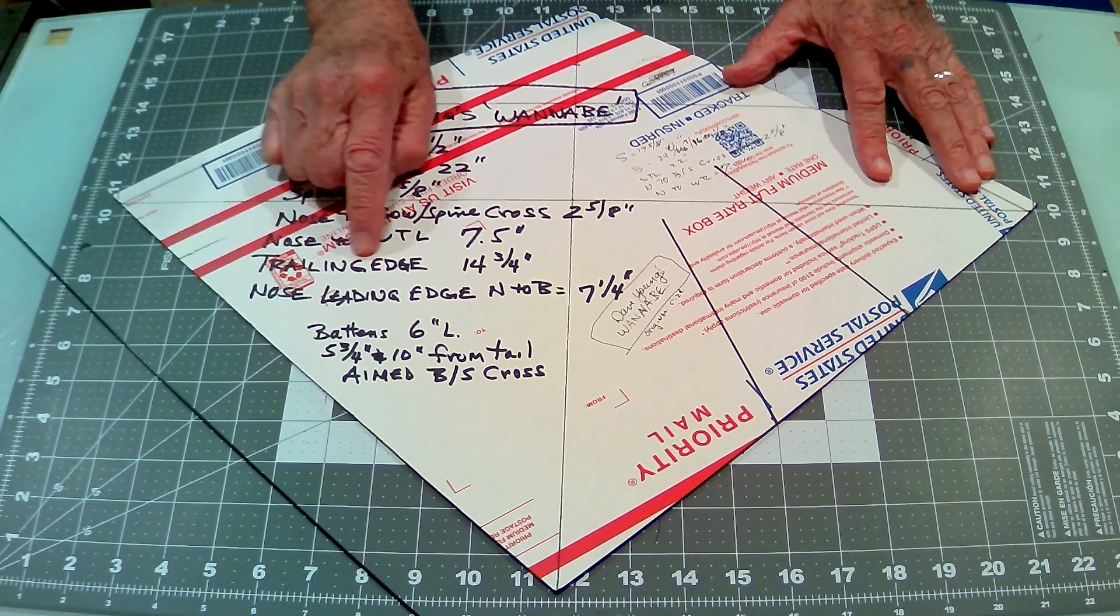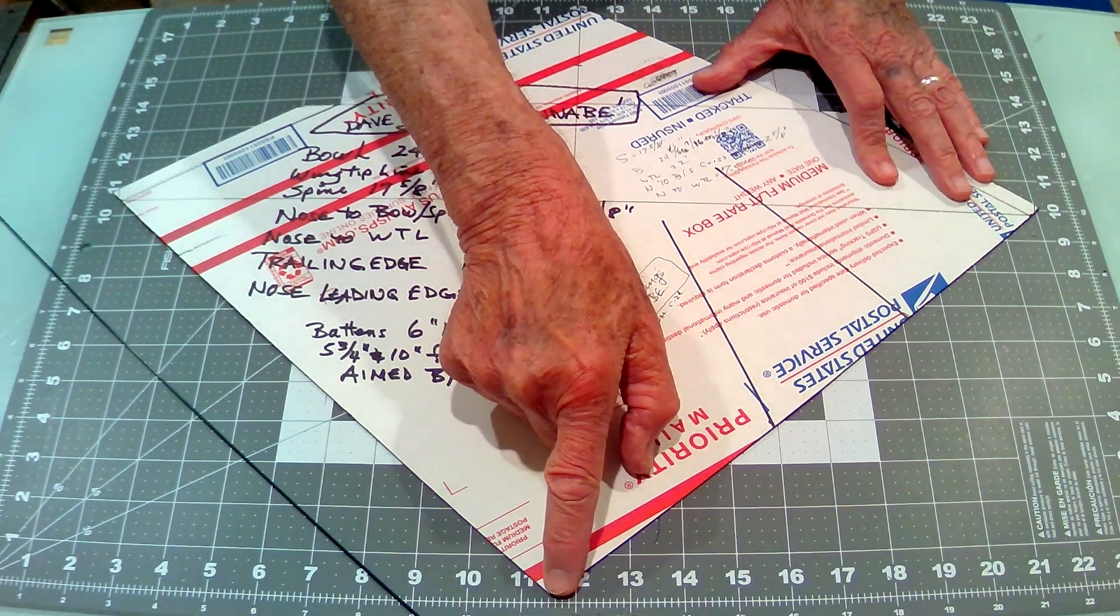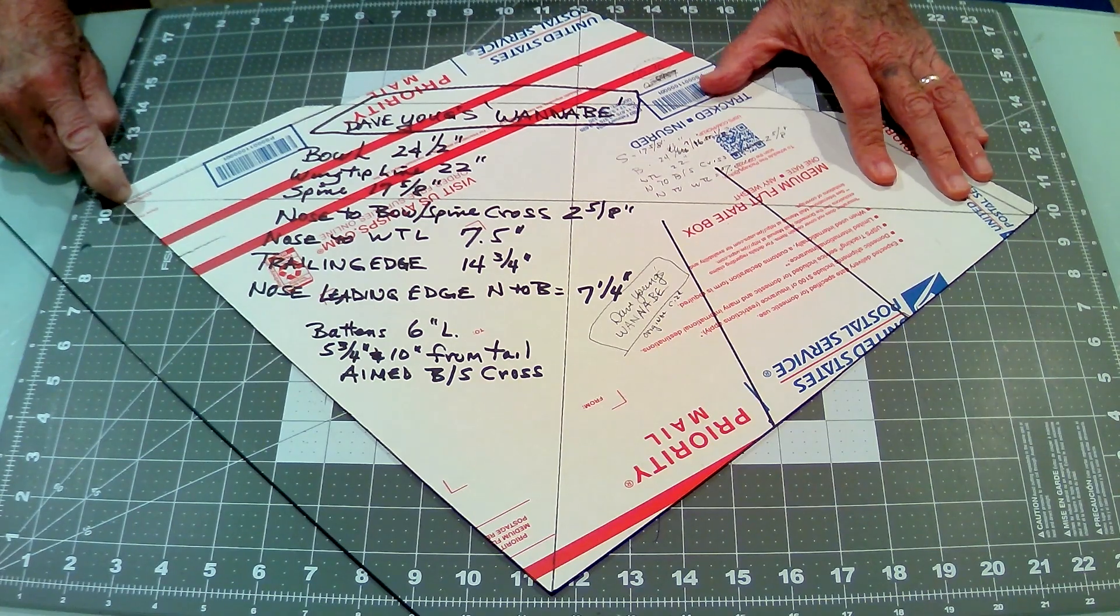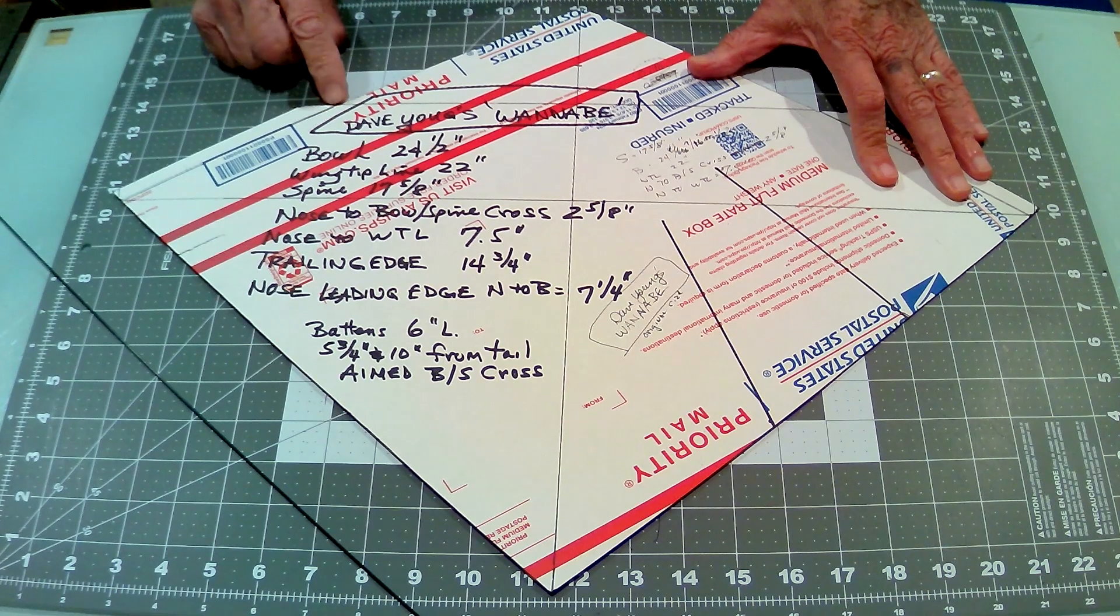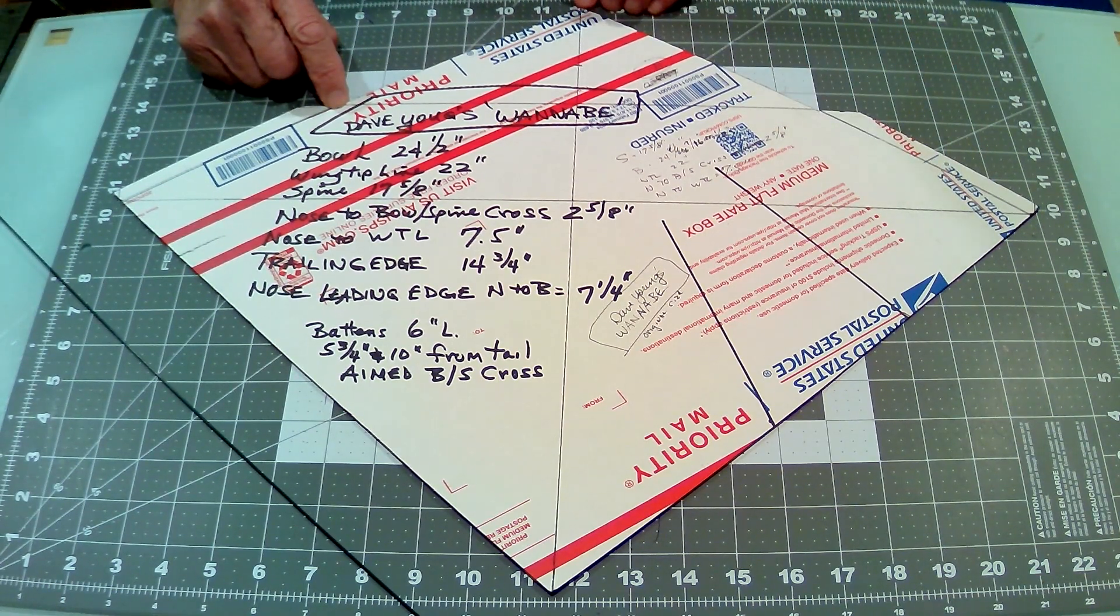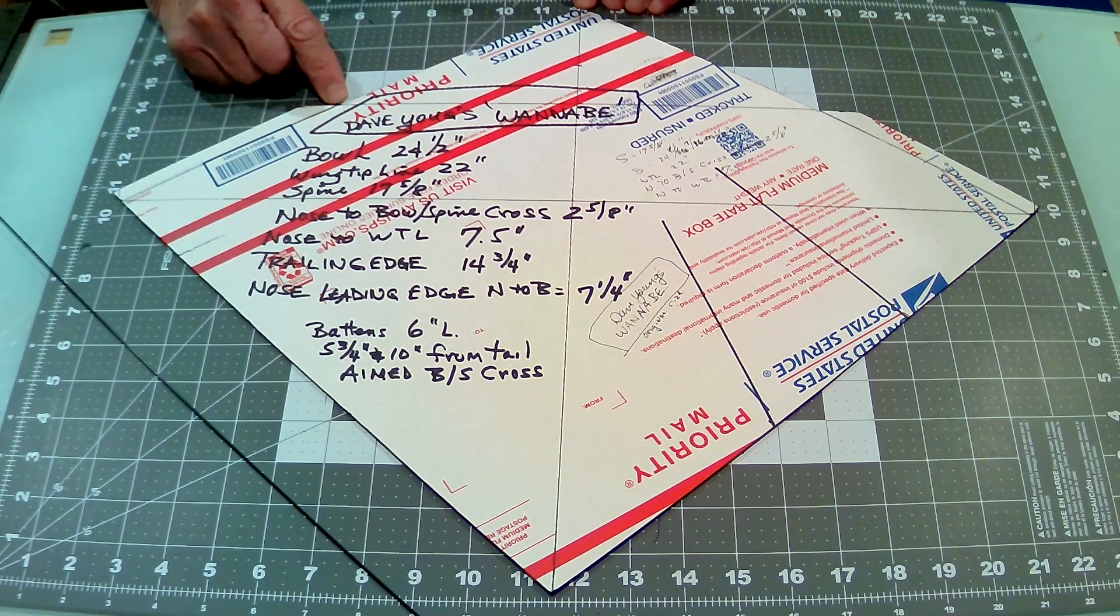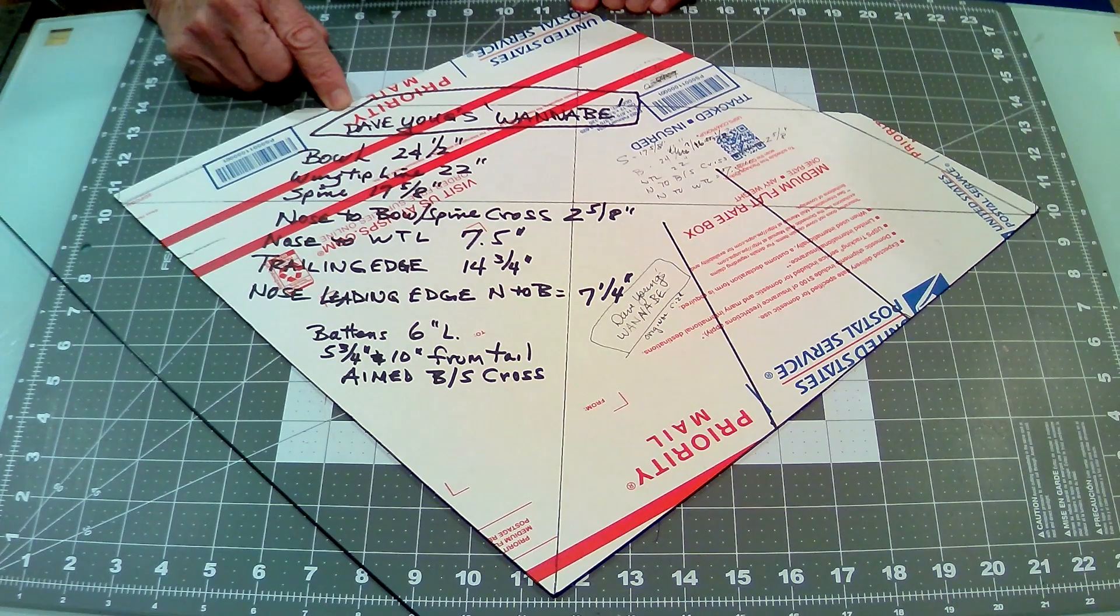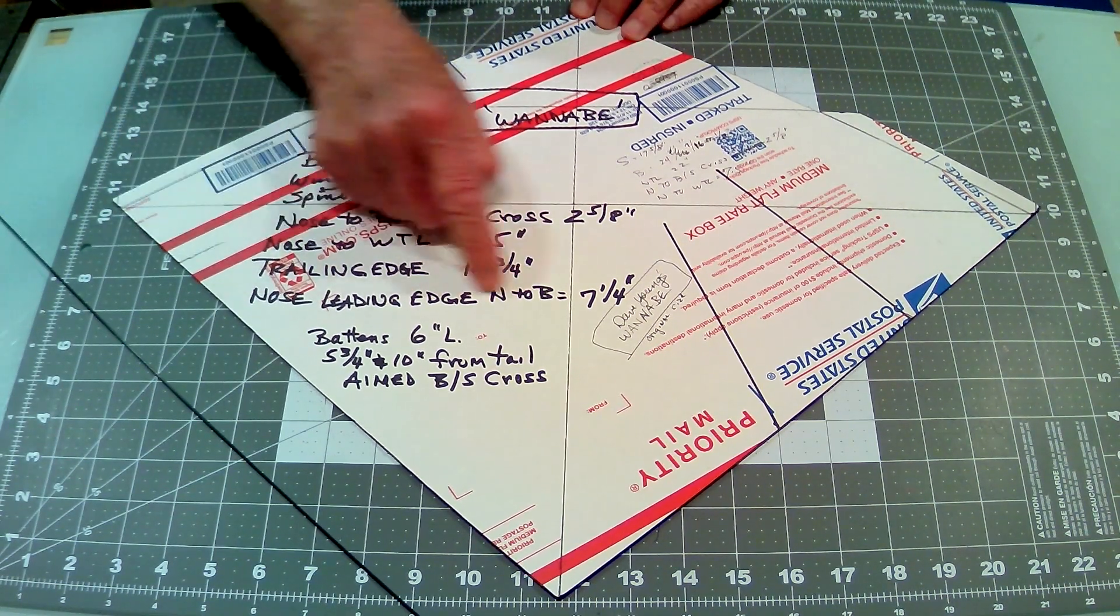The trailing edge is 14 and 3 quarters inches from the tail to the wingtip, where the wingtip line meets the trailing edge. This distance from here to here is seven and a quarter inches right here.